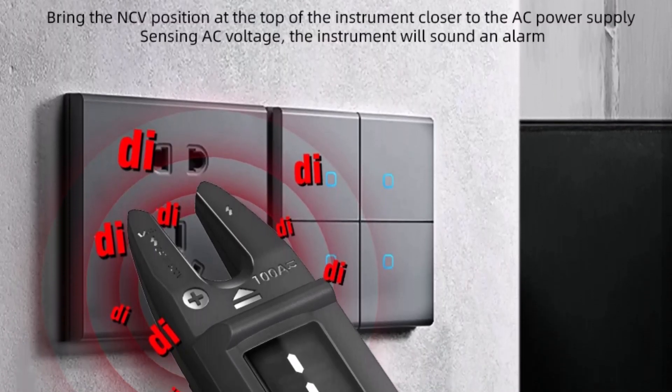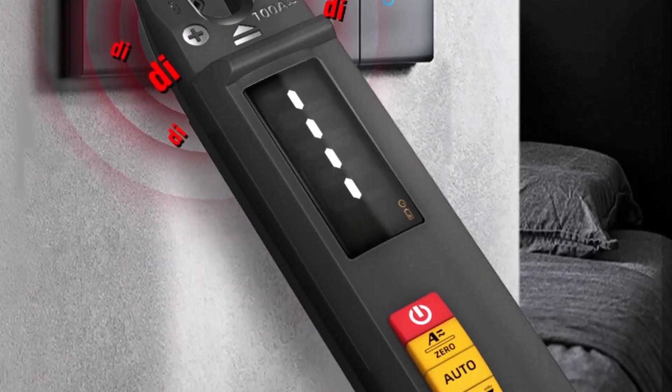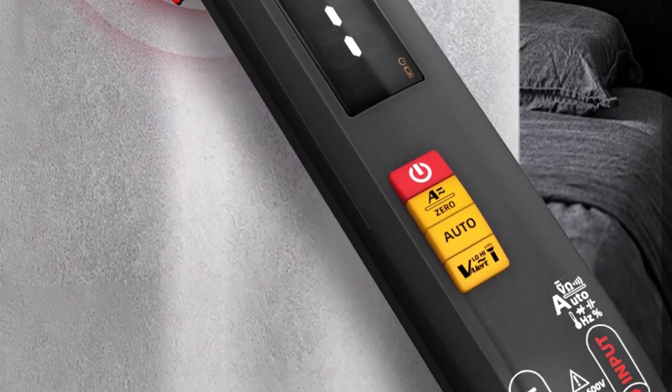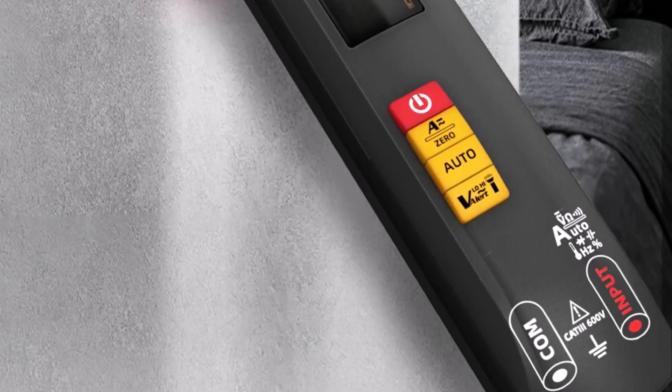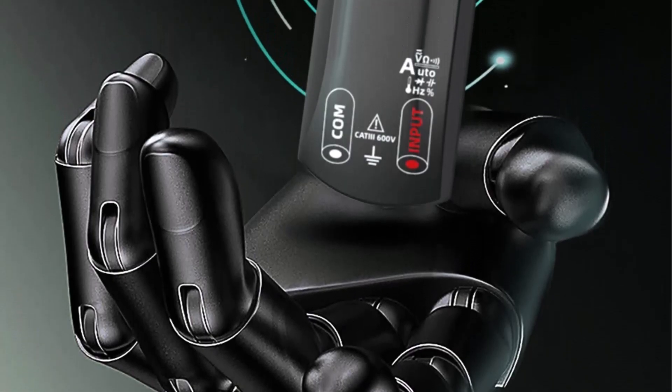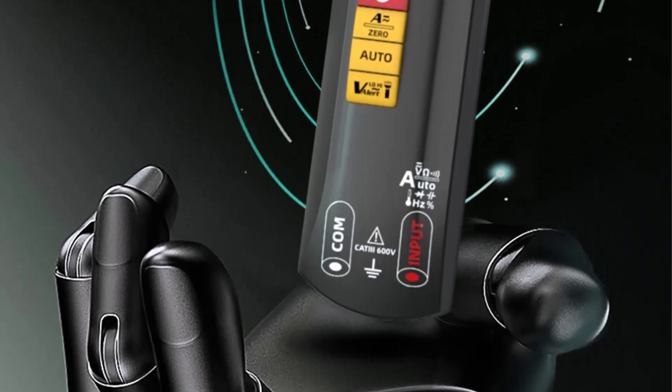This clamp meter includes smart mode operation, making it intuitive for beginners and time-saving for professionals. Its CAT 3 600 safety rating and auto power-off function reflects solid engineering and a focus on user protection.